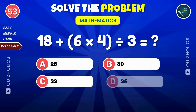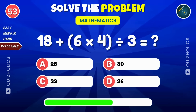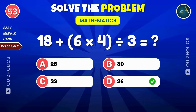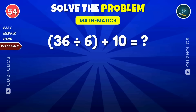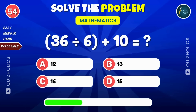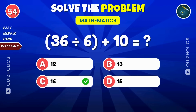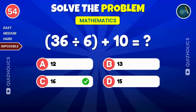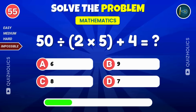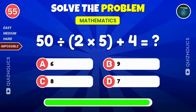Think hard on this one: 18 plus 6 times 4, divided by 3. Here's a tricky one: 36 divided by 6, then add 10. Push your limits: 50 divided by 2 times 5, then add 4. Share this video with a friend and see if they can solve it faster than you.